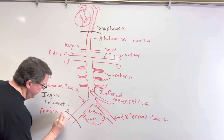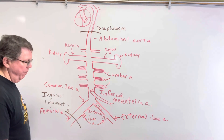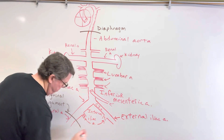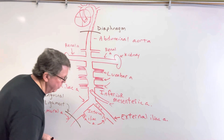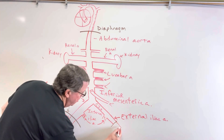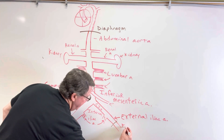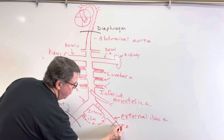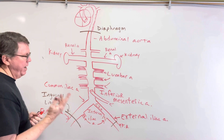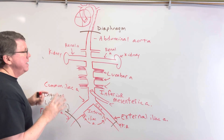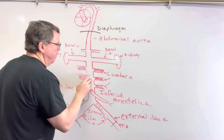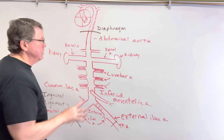Eventually the external iliac artery passes a ligament called the inguinal ligament, and once we get past that inguinal ligament, this is now going to be called the femoral artery. This part is basically the pelvis, and below the inguinal ligament we're down in the thigh at the femoral artery. That's going to play a role when we start talking about endovascular aneurysm repairs.